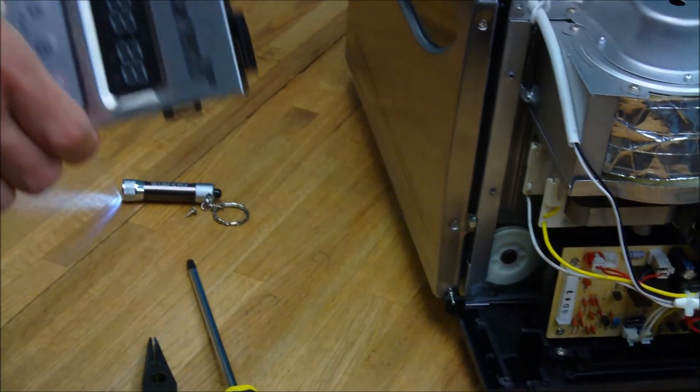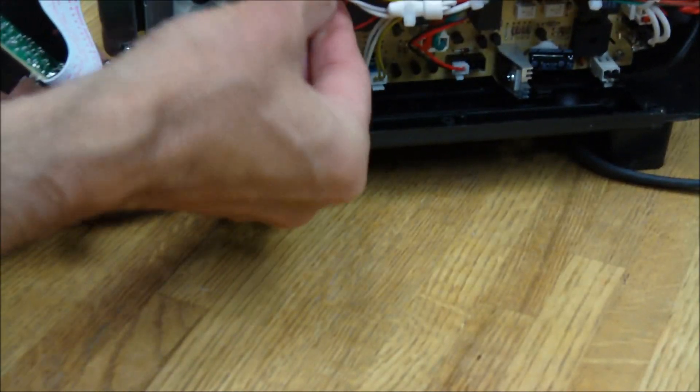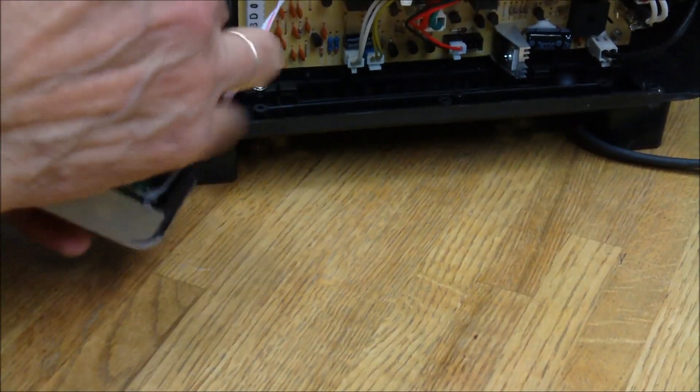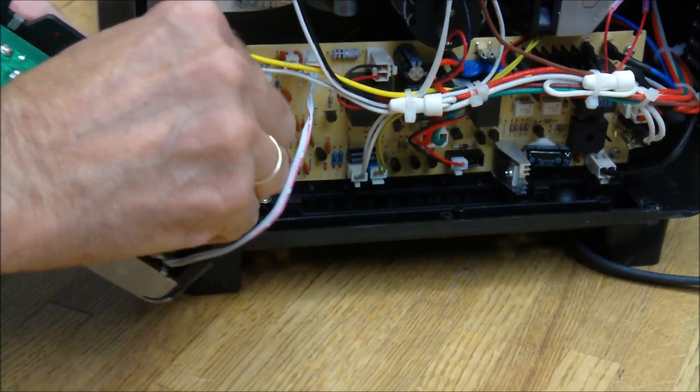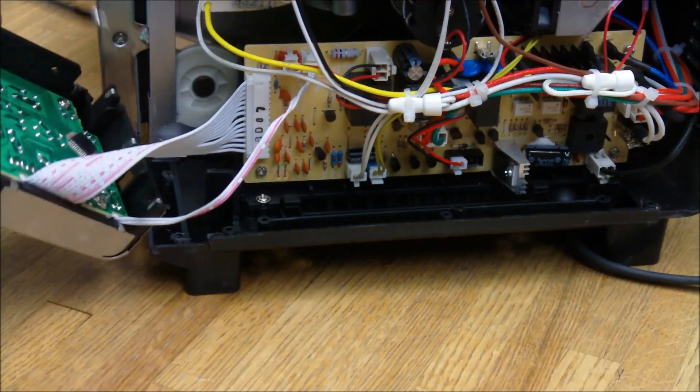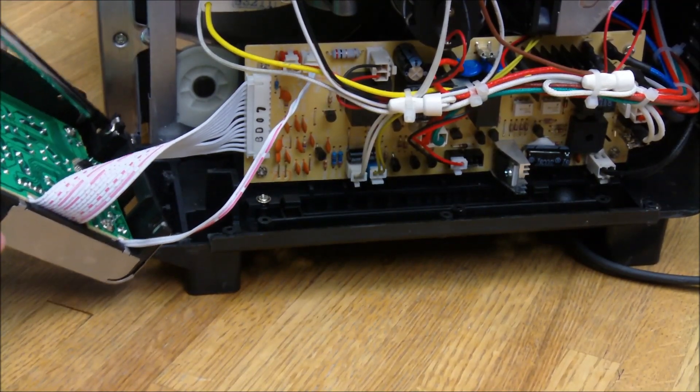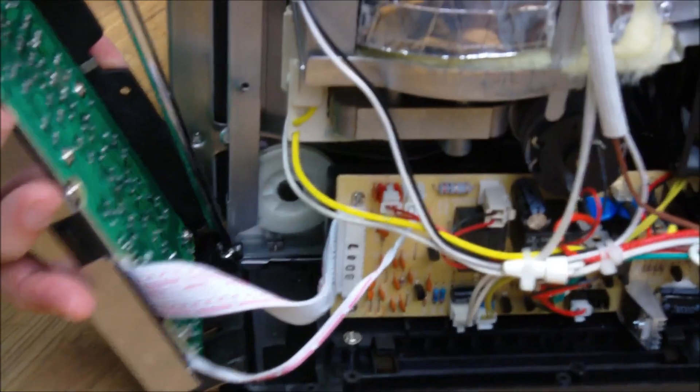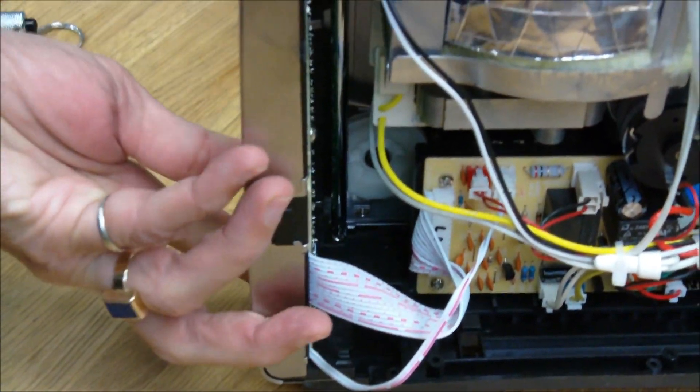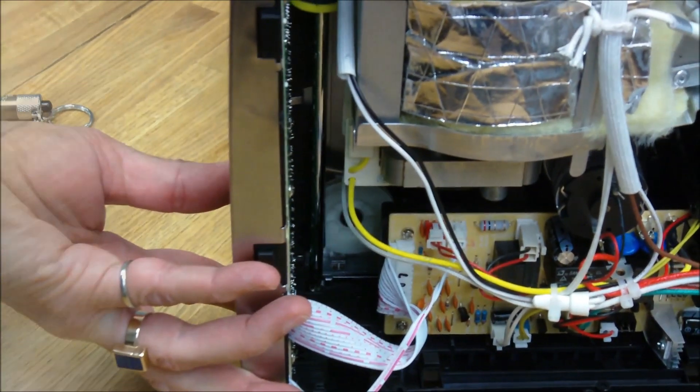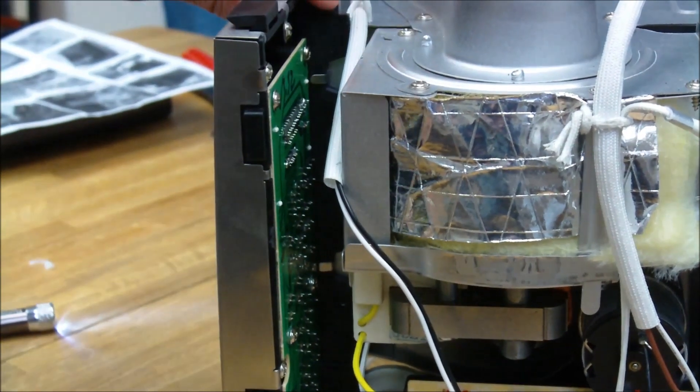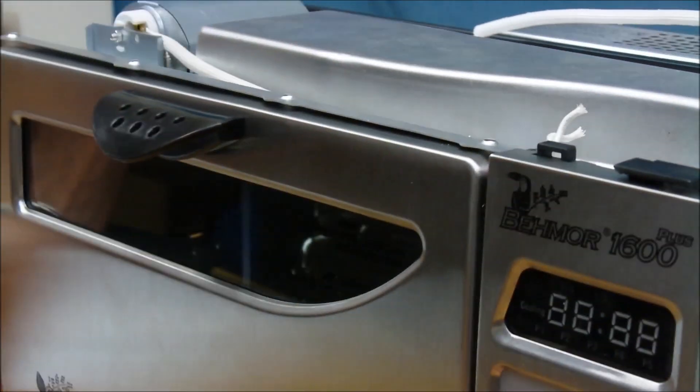We're going to start off doing everything in reverse. Connector, connector. And now we're going to start putting the screws back. Don't forget this has to go over the door. At this point, it's a good idea to take a look and make sure everything is lined up properly on the outside, which it appears to be.